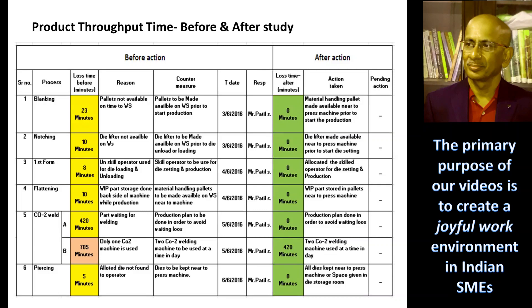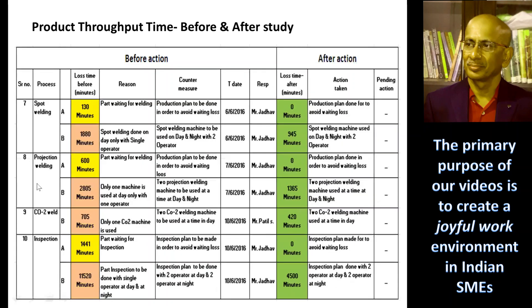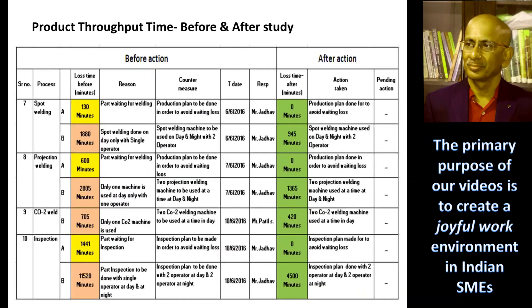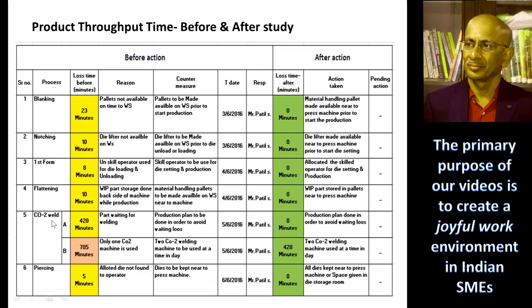I have to identify: piercing, spot welding, projection welding, fixture welding, and inspection. You have to total the suppression of the operations, meaning you will be looking at total lost time per workstation.